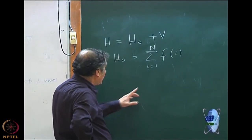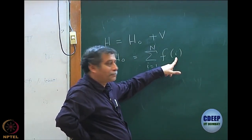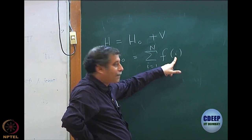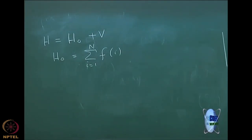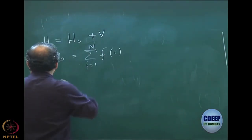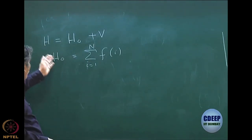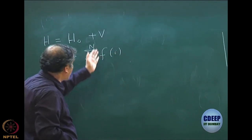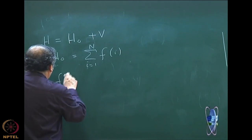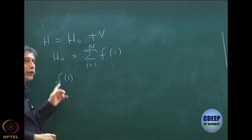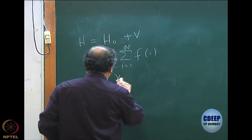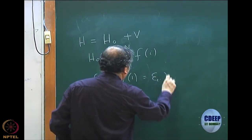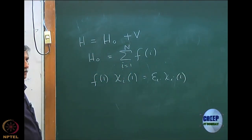Please understand this is an n-particle operator, so these i's are not spin orbitals — I want to make sure because people get confused. These are the coordinates. Whenever I am writing f of something, that is a coordinate: r₁, x₁, x₂, xₙ — basically the Fock operator in terms of spin orbitals. So these i's are not spin orbitals because the Hamiltonian is a function of electron coordinates.